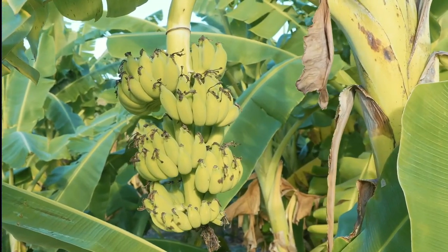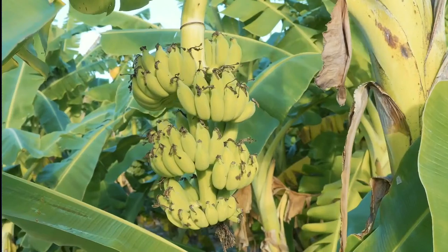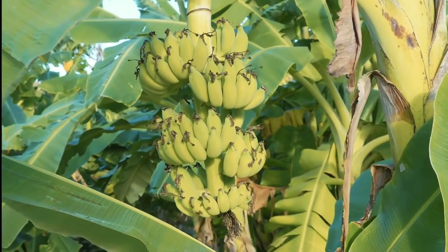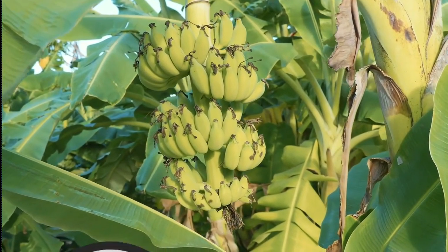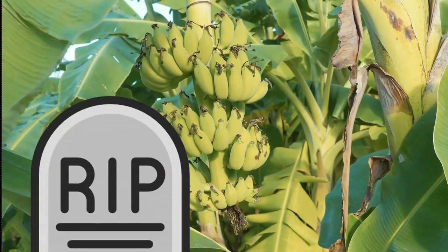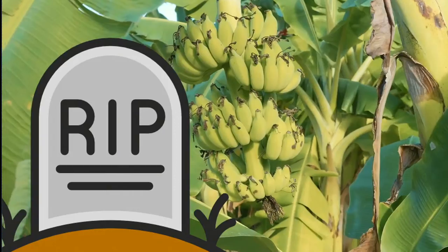In fact, there's a good chance that the banana you're familiar with, the Cavendish, might not be around much longer. I'm Science Mom. And I'm Math Dad. Today's lesson explores the two main strategies that organisms have for reproduction, sexual and asexual, and the advantages and disadvantages of each.